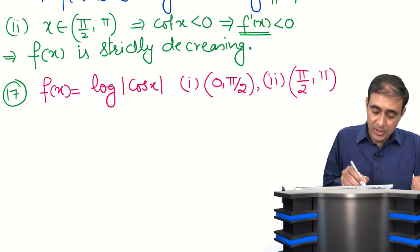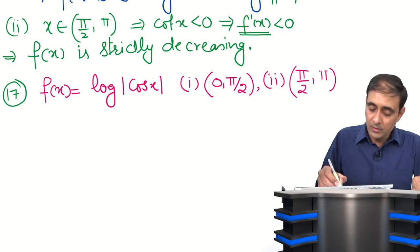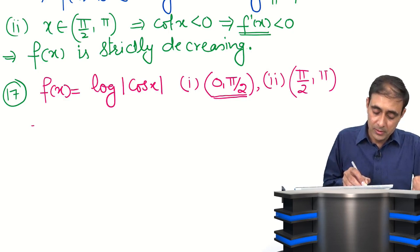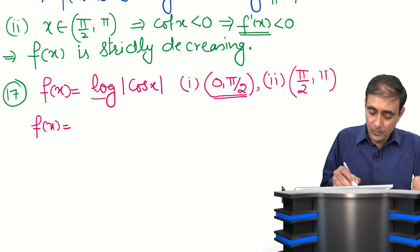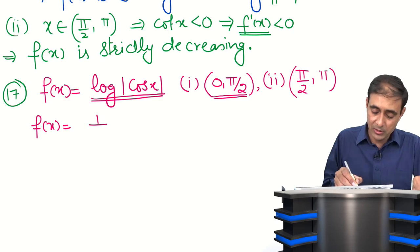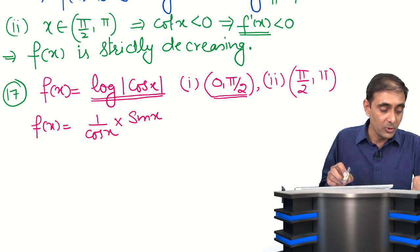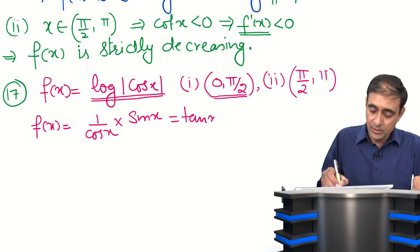Differentiating f(x) = log|cos x|: f'(x) = 1/cos x into the derivative of cos x, which is sin x. So 1/cos x into sin x gives us tan x. So f'(x) = tan x.